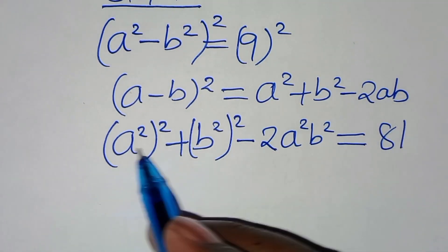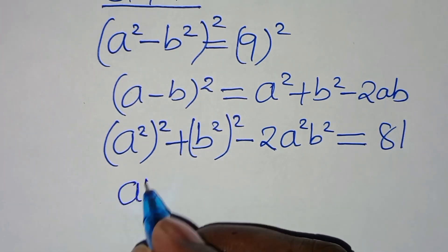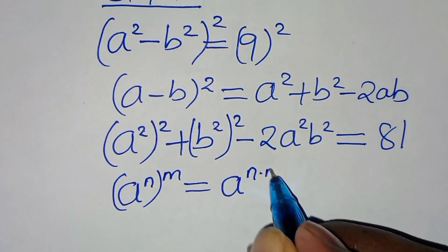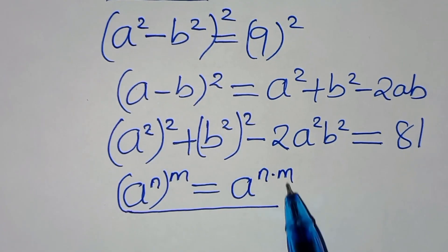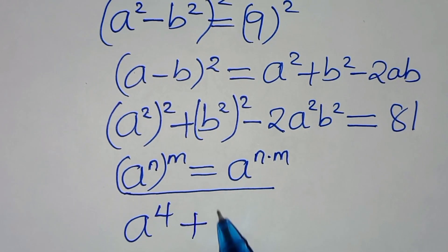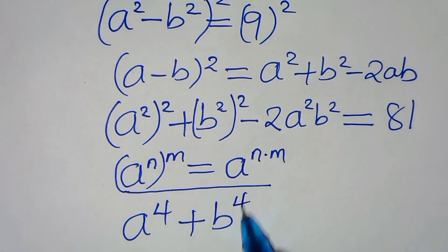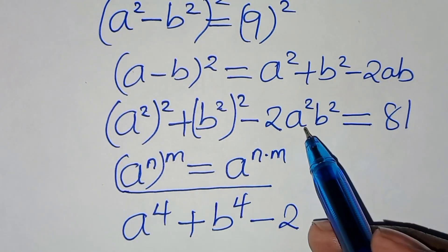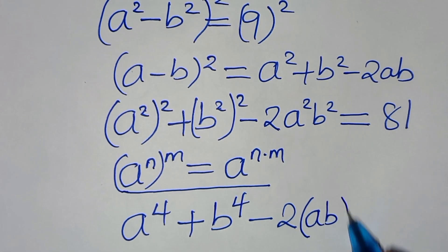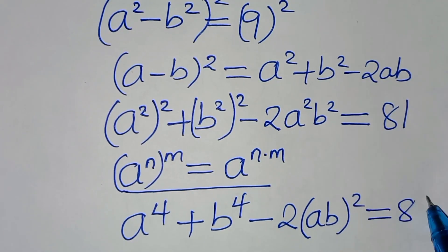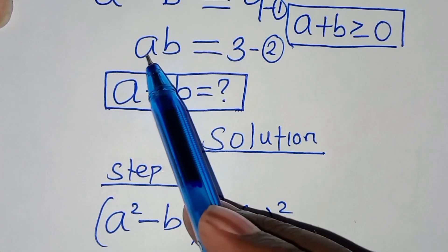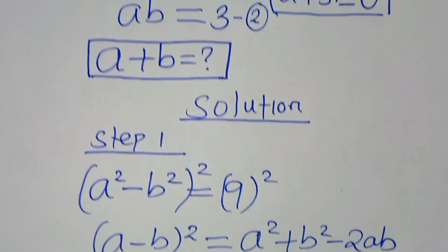Now, each term raised to a power uses the exponent rule (aⁿ)ᵐ = aⁿˣᵐ. Applying this, we get a⁴ + b⁴ - 2·(ab)² = 81. Since ab = 3 from equation 2, we substitute that value in.